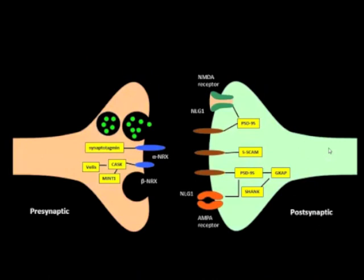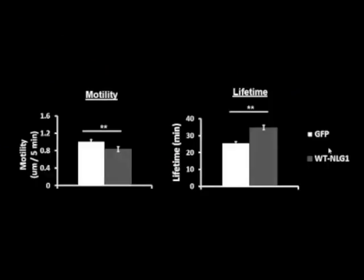At first, we overexpressed synapse norexin in individual tactile neurons and performed in vivo two-photon time lapse imaging. We found that overexpressing norexin hyperstabilizes dendritic philipodia, shown by increased philipodia lifetime and low motility.